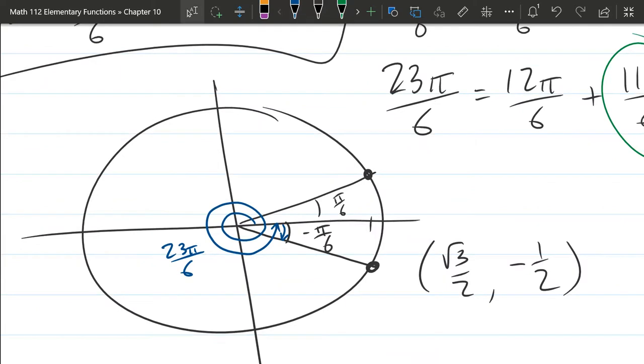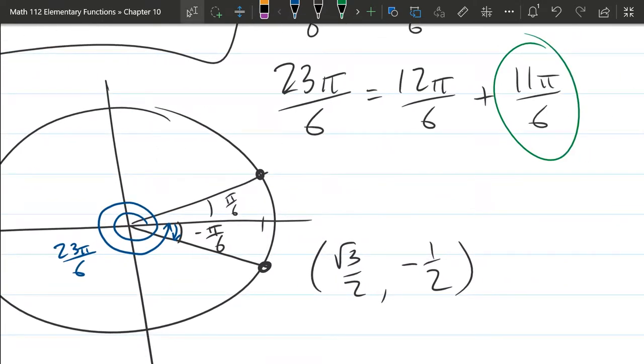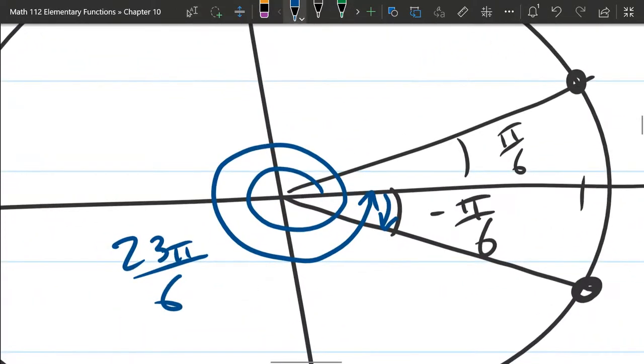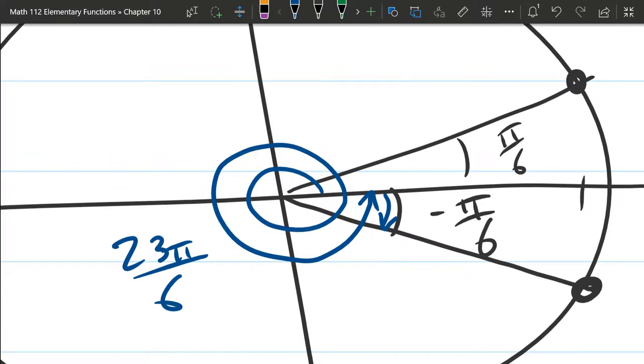I'm going to have to erase this in order to draw the other version, which is a full rotation and then 11π over 6. Actually, I'll do it on top in green, it'll be ugly, but that's okay. So I'm going to do one full rotation and then an 11π over 6 puts this right there. So it's almost two full rotations, except just a little bit short. So I'm going to erase this green because it just looks ugly with the both in there.